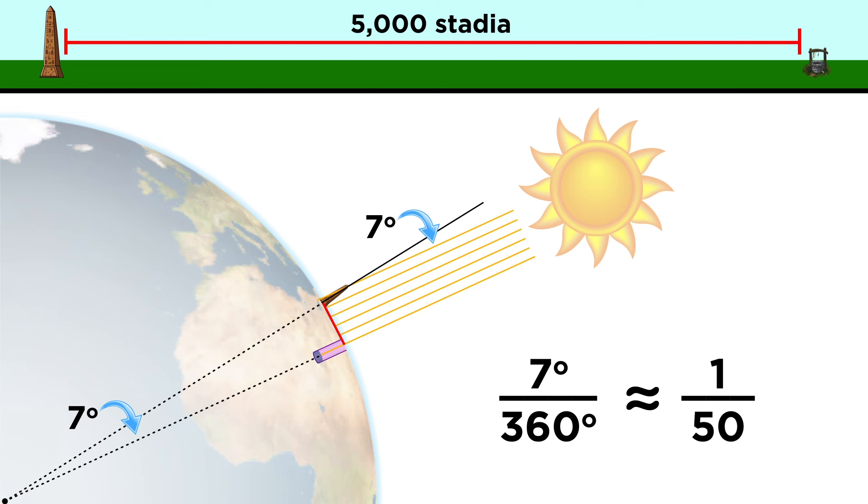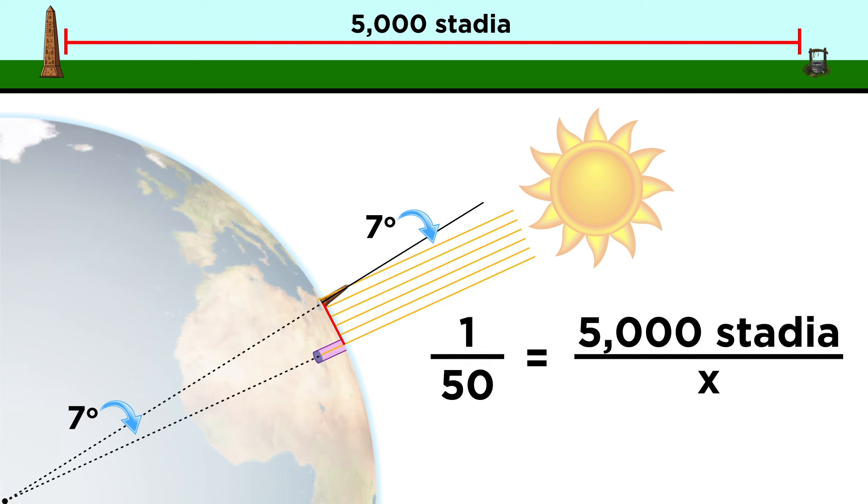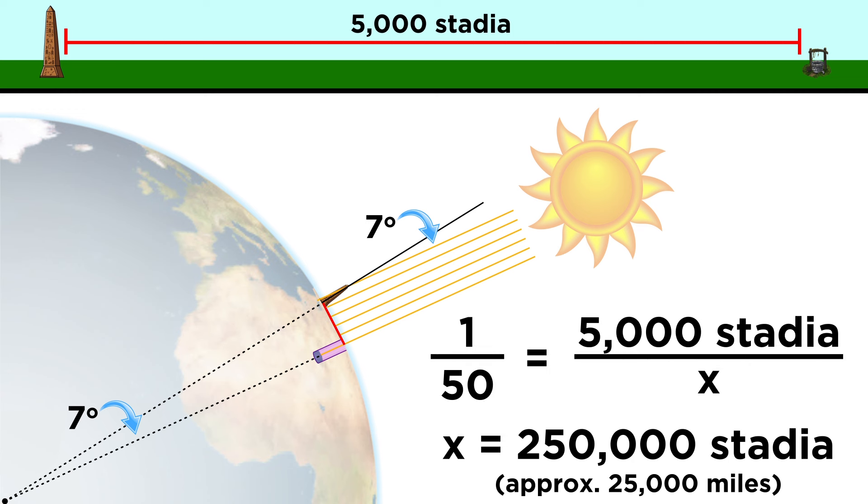The distance between these locations was known to be five thousand stadia, so we can use a simple ratio to deduce that the circumference is around two hundred fifty thousand stadia, which is around twenty-five thousand miles.